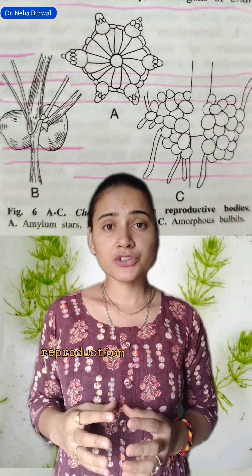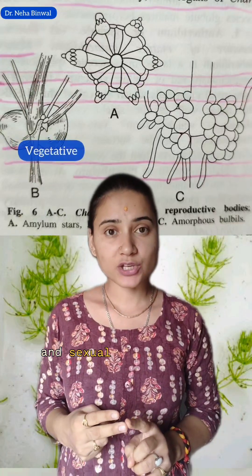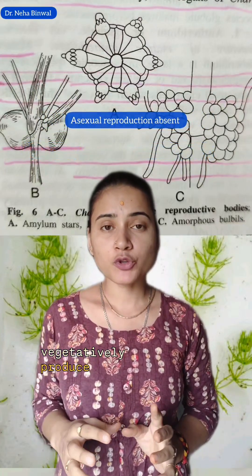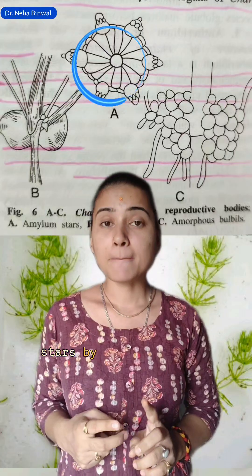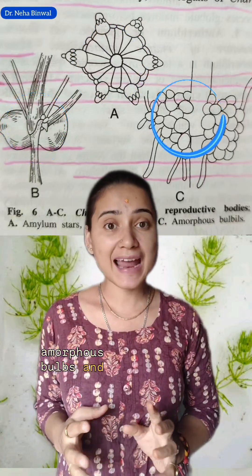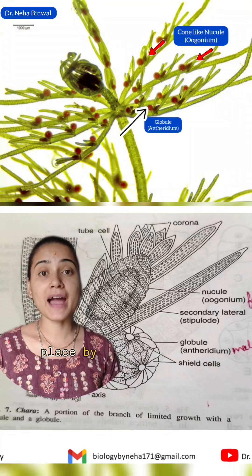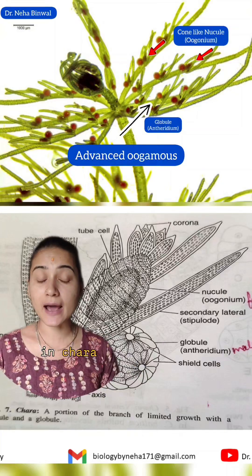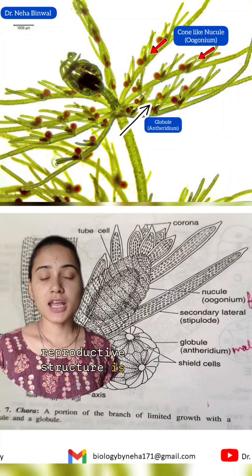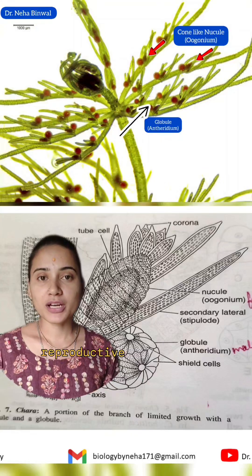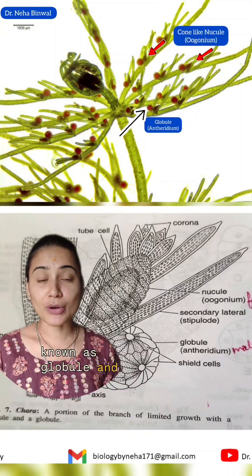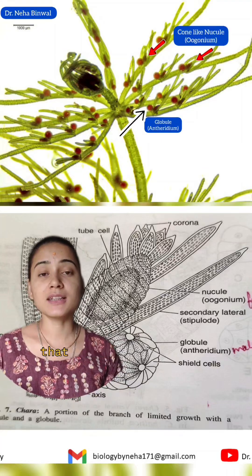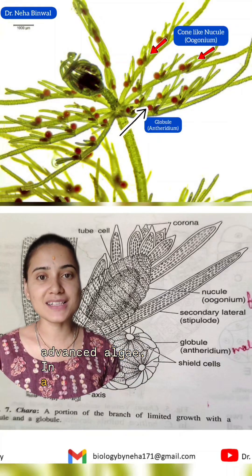Reproduction in Kara takes place by vegetative and sexual methods. Asexual reproduction is generally absent. Vegetatively, Kara reproduces by the formation of amyloids, root bulbils, and amorphous bulbils. Sexual reproduction in Kara takes place by a highly advanced oogamous method. The female reproductive structure is known as the nocule, while the male reproductive structure is known as the globule. These advanced sexual reproductive structures are the reason Kara is considered a highly advanced alga.